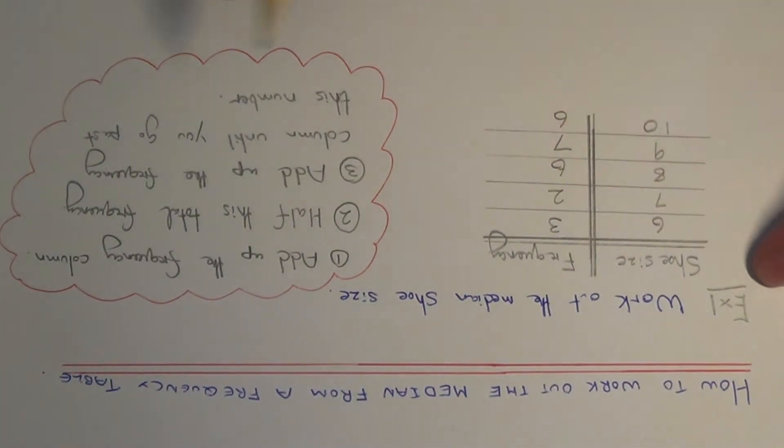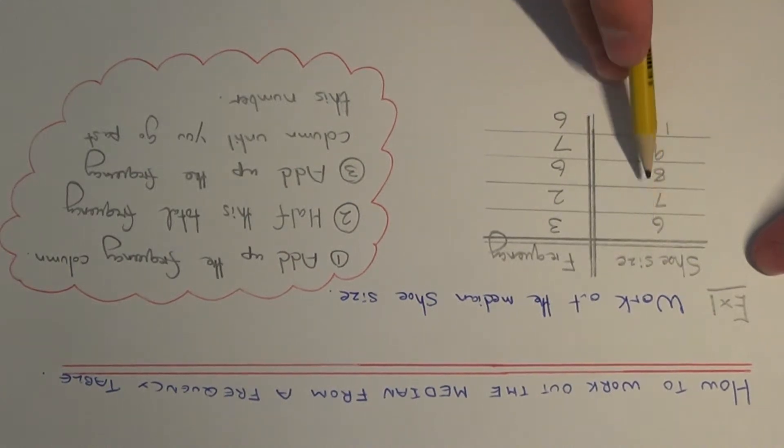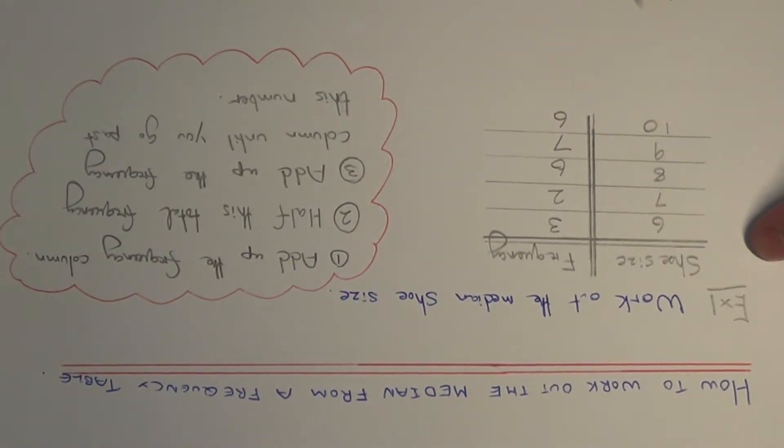So let's have a look at our little example here. We've got to work out the median shoe size, so we've got a frequency table where the shoe sizes go from 6 up to size 10.